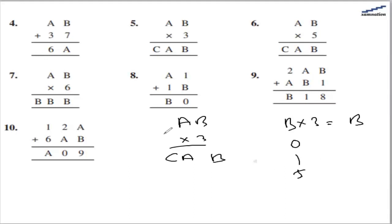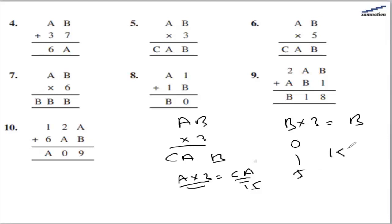Now looking at a multiplied by 3, giving ca. Since we are multiplying a one-digit number and getting a two-digit result, a must be more than 3. If a is 5, then 5 multiplied by 3 gives 15. In that case, b can have either 0 or 1 as a value, and both values give the same result.